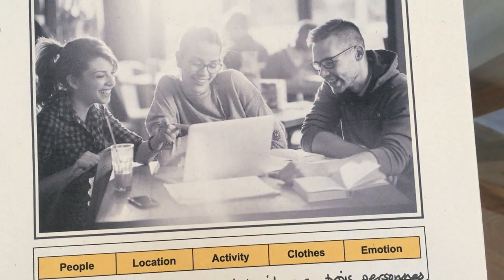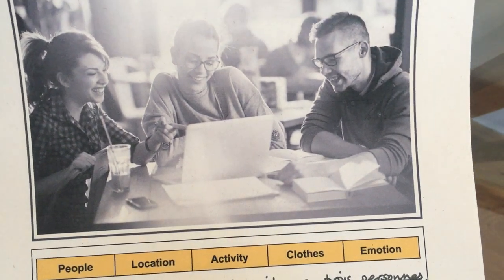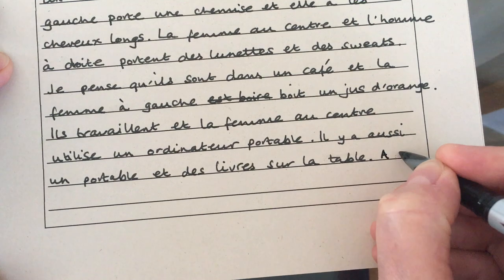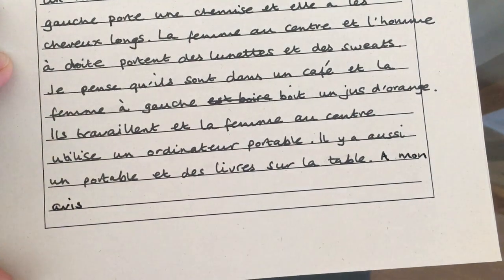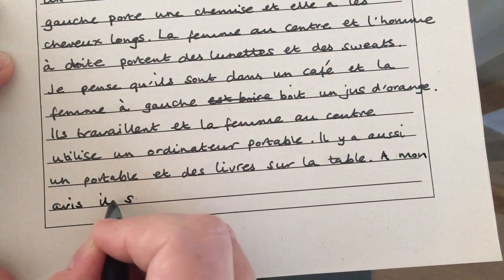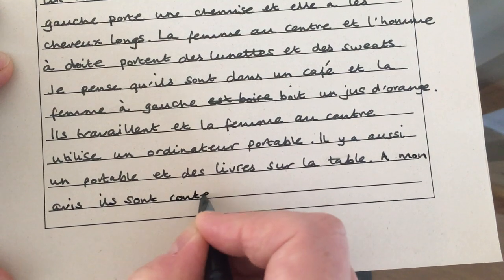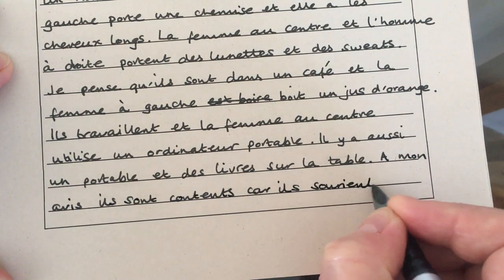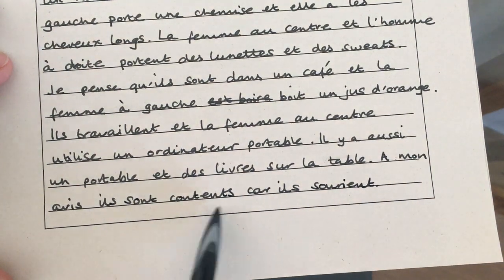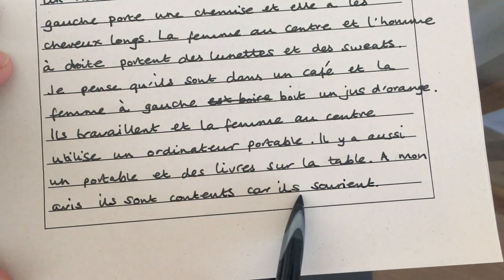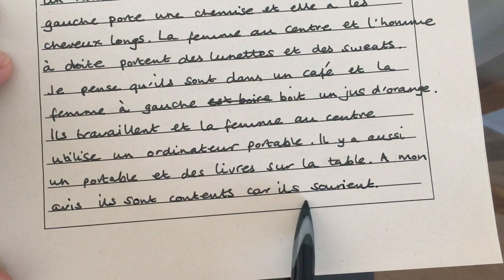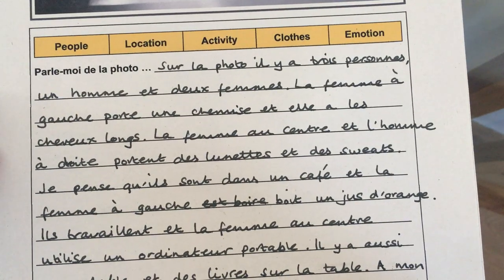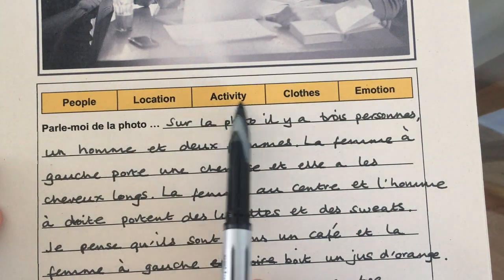A lot of the time people seem to be quite happy in the photo cards, but be careful — there are instances where they're not. But fortunately here they are happy. So I'm going to give my opinion on their mood with another opinion starter: 'À mon avis' — in my opinion — 'ils sont contents car ils sourient' — they are happy because they are smiling. I don't need to find a French word for 'are' because 'ils sourient' already means 'they are smiling'. So there we have a detailed description of the photo card covering People, Location, Activity, Clothes and Emotion.